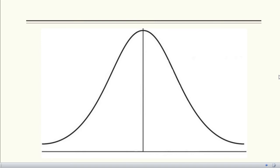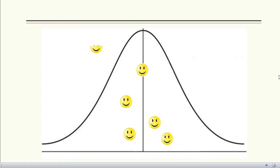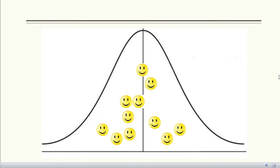Consider the example of height of a set of students in a class. The majority of students will have height close to a particular value, while the number of students with height much lower or higher than this value will be very less. This can be seen from the curve shown on screen.